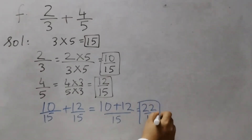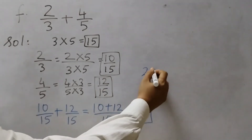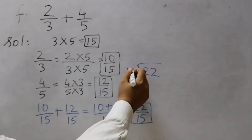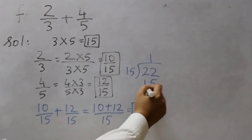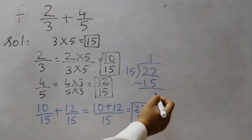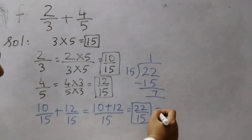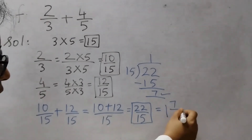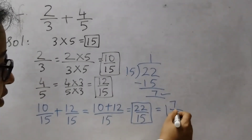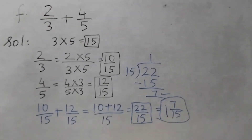So 22/15 is your answer as an improper fraction. If you want, you can write it as a mixed number. 22 ÷ 15: 15 ones are 15, and 22 − 15 = 7. So we write the quotient 1 first, then the remainder 7, then the divisor 15. The mixed number is 1 and 7/15.